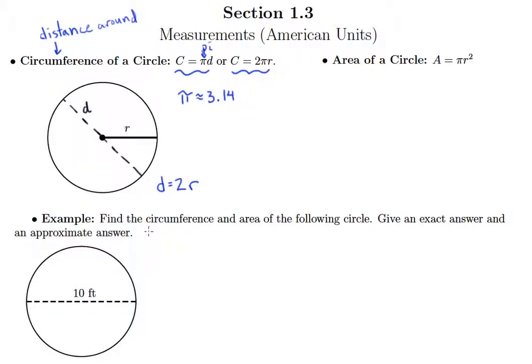So in this example here, find the circumference and area of this circle. Give an exact answer and an approximate answer. We'll talk about the nature of exact versus approximate as we do this example.